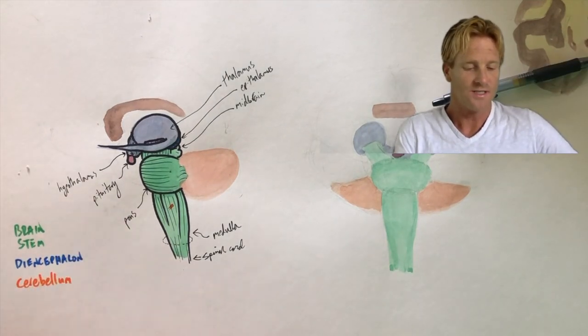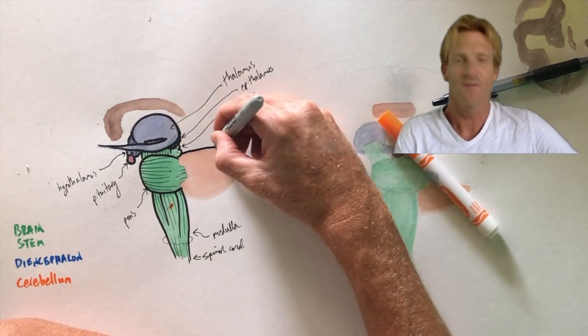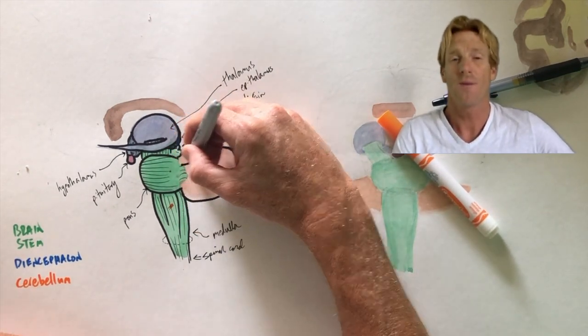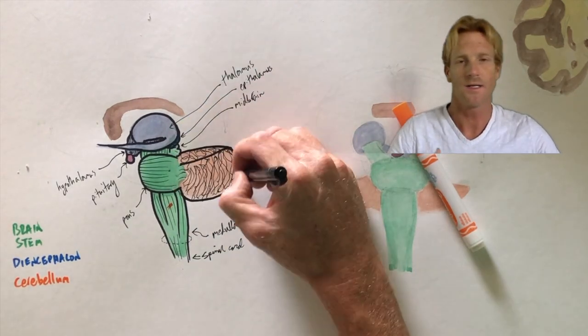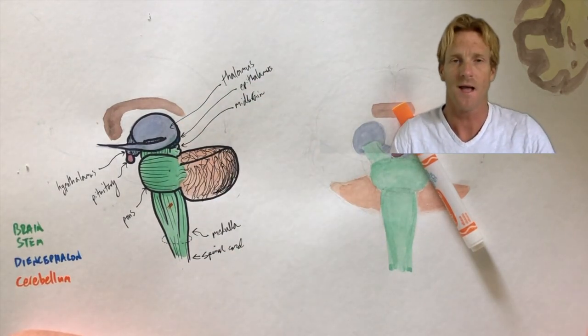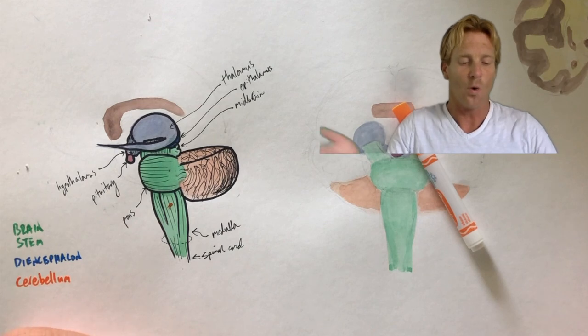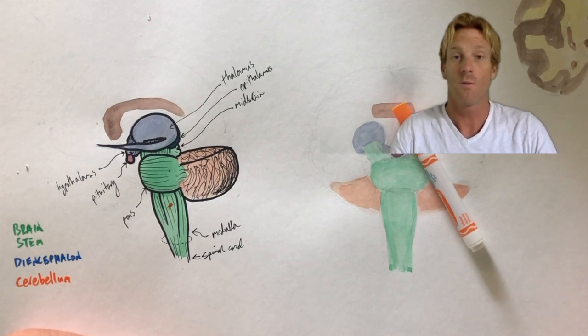Next we'll have the cerebellum which is this structure in this reddish peach color. The cerebellum is going to help us coordinate sophisticated motor commands. If you're doing something like dancing or playing soccer, the cerebellum is going to be highly involved in coordinating those motor commands so that we can keep our balance.